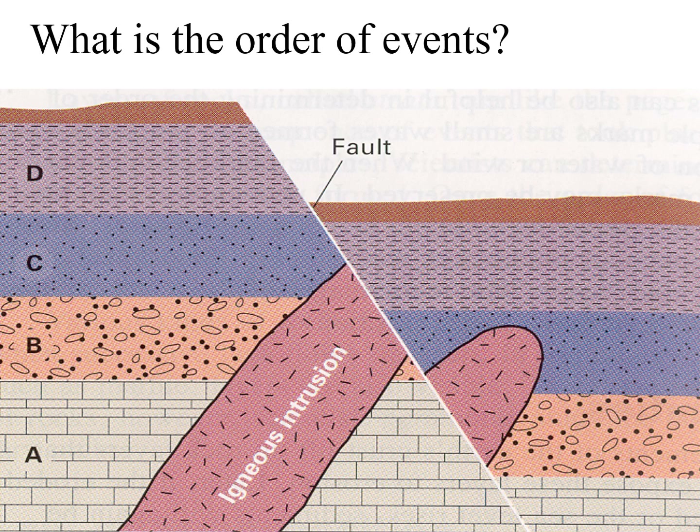What's the order of events? We still have layers A, B, C, and D, but we also see an igneous intrusion and a fault. What was the very last thing to occur? Well, the fault — did that go through everything? Yes. What was next to last? Look at the igneous intrusion — it burned through A, B, and C, so it had to have come after those layers. Was D there when the igneous intrusion occurred? There's really no way to tell. So the most likely order is A, B, C, probably D, then the igneous intrusion, then the fault.